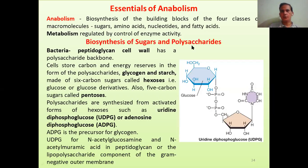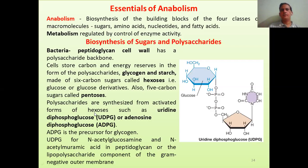Let's look at the biosynthesis of sugars and polysaccharides. In bacteria, sugars and polysaccharides play a pivotal role — one major role is the formation of the peptidoglycan cell wall. Cells also store carbon and energy reserves in the form of larger polymers such as glycogen and starch. These are made of hexose sugars, usually glucose or glucose derivatives. Some pentose sugars are also present. Polysaccharides are synthesized from activated forms of hexoses such as uridine diphosphoglucose (UDPG) or adenosine diphosphoglucose (ADPG).